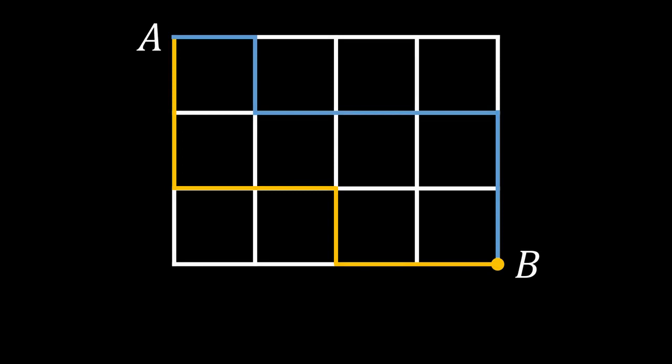However, there is another way we could count the number of paths on a grid. And that is by combinations. Imagine we have a 3 by 4 grid. And once again, we want to count the number of paths from a to b.